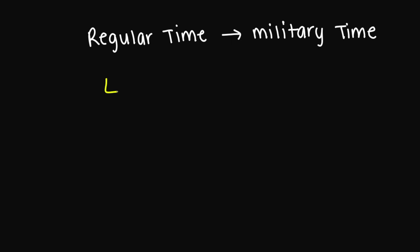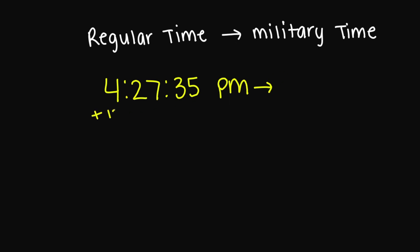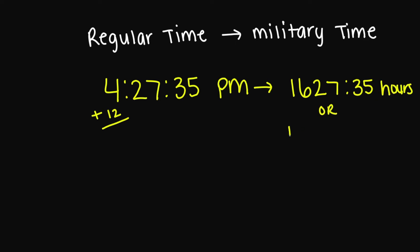What about 4:27 and 35 seconds p.m.? Military time — because I'm going to add 12 to my hour number — this is going to be 1627:35 hours. Or you're going to add the colon: 16:27:35 hours.